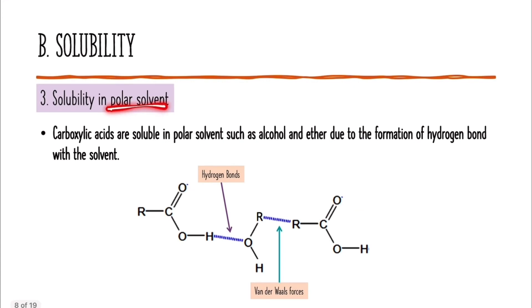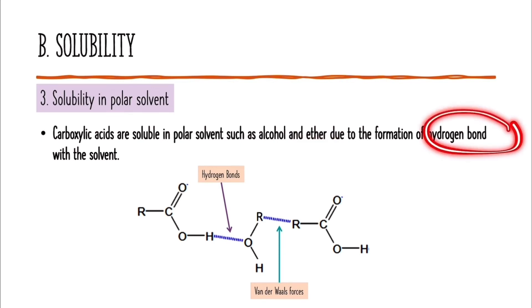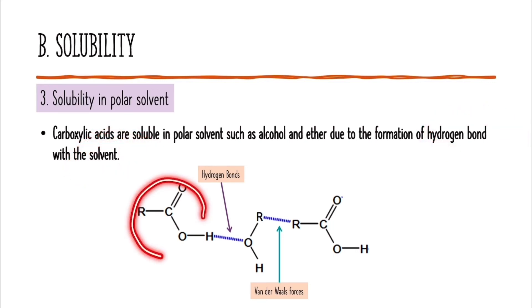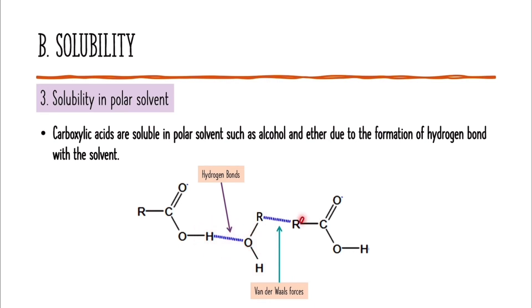The last category is solubility in polar solvents. Carboxylic acids are soluble in polar solvents such as alcohol and ether due to the formation of hydrogen bonds with the solvent. Because carboxylic acid can form hydrogen bonds with the polar solvent, we can say that carboxylic acid is also soluble in polar solvents.